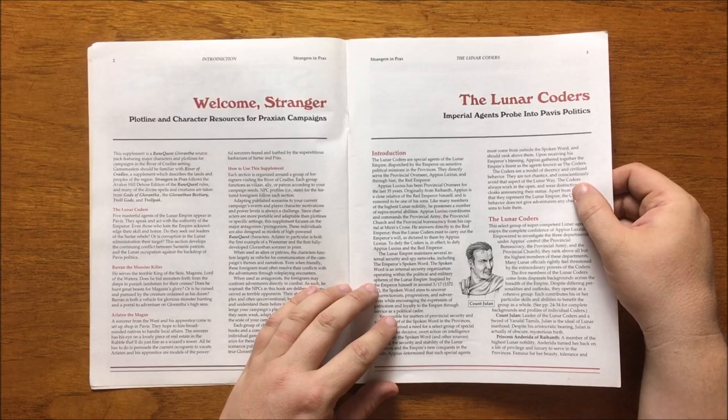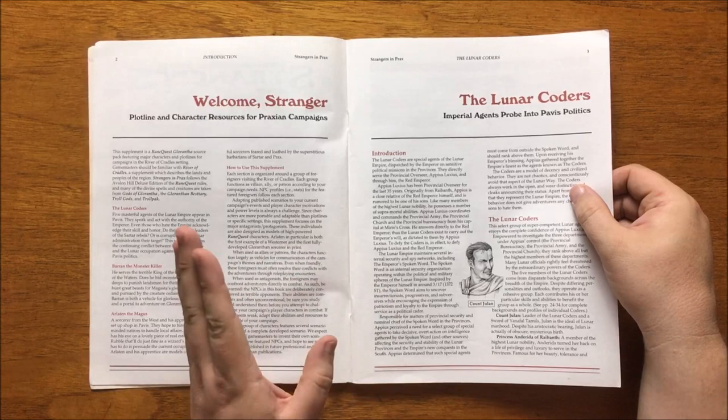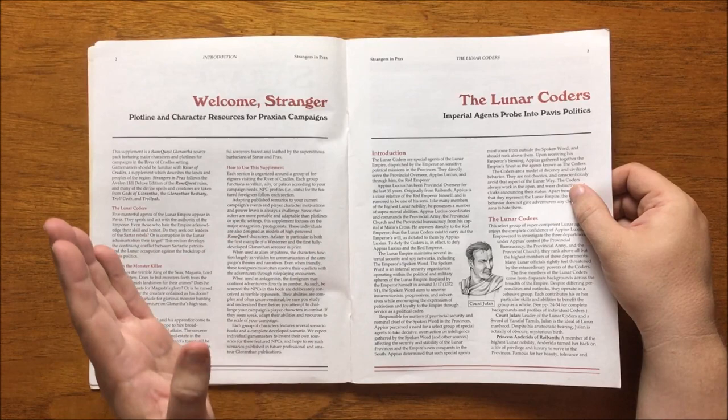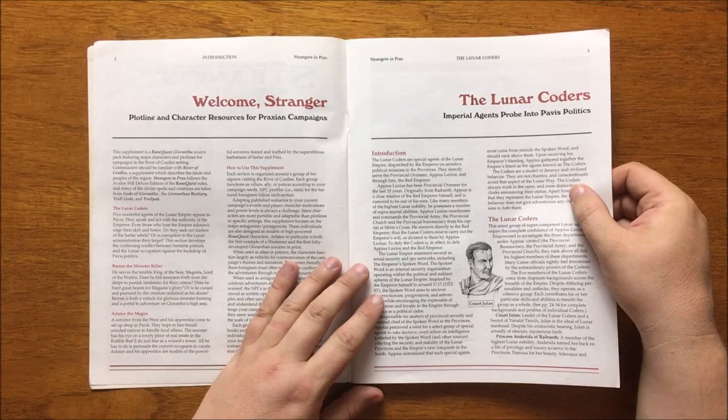Next we have the first group, the Lunar Coders. The Coders are agents of the Lunar Empire, who are dispatched by the Emperor personally on political missions. They directly serve the Provincial Governor, Appius Luxius, who is himself rumoured to be one of the Red Emperor's sons. The Coders exist to carry out the Emperor's will, to defy them is to defy the Red Emperor by proxy. The Coders are described as the model of decency in civilised behaviour.